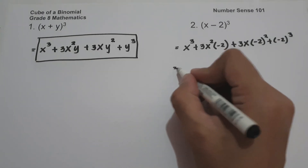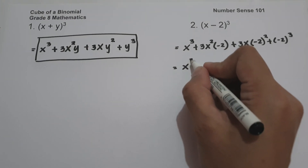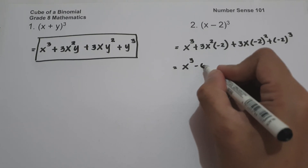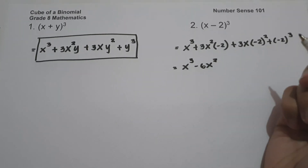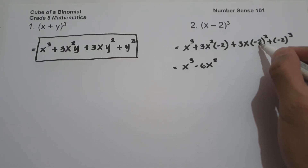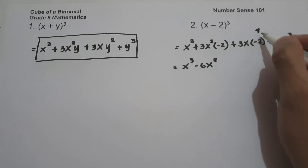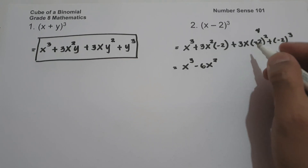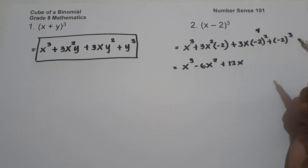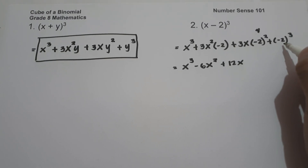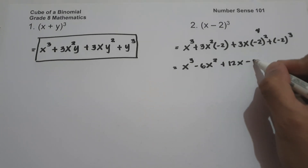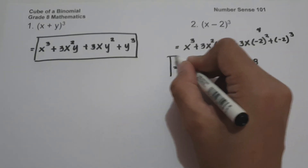To simplify: x cubed, then 3x² multiplied by negative 2 gives negative 6x². Then negative 2 raised to 2 is positive 4, and positive 4 multiplied by 3x is 12x. Then negative 2 raised to 3 is negative 2 times negative 2 times negative 2, which is negative 8. So the final answer is x³ − 6x² + 12x − 8.